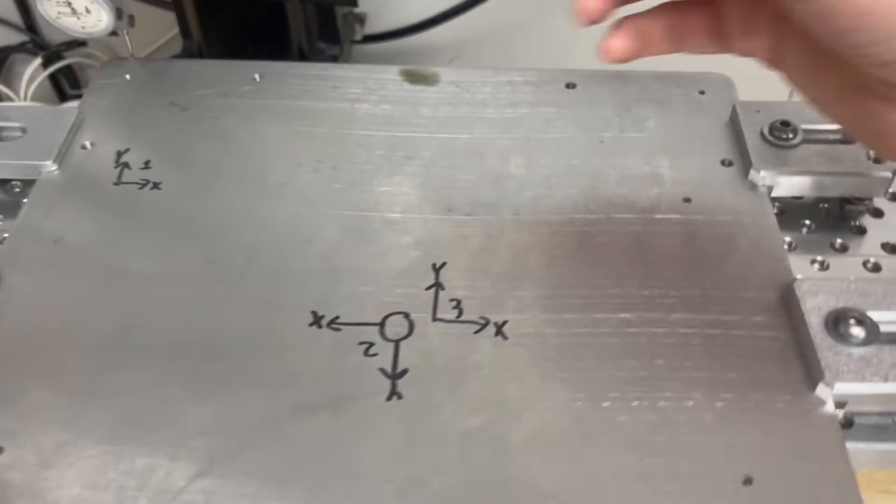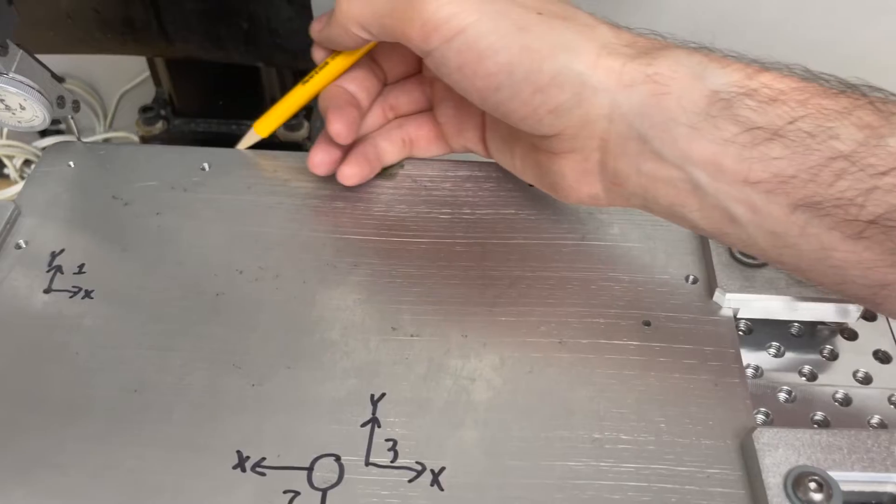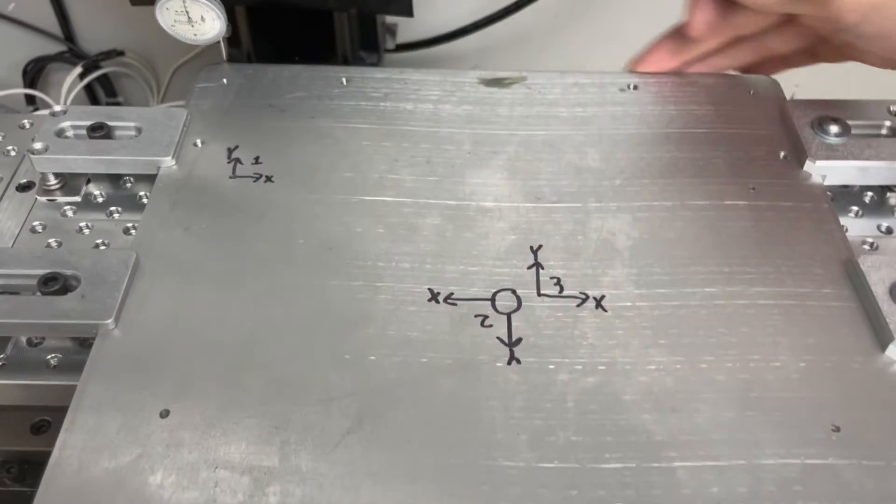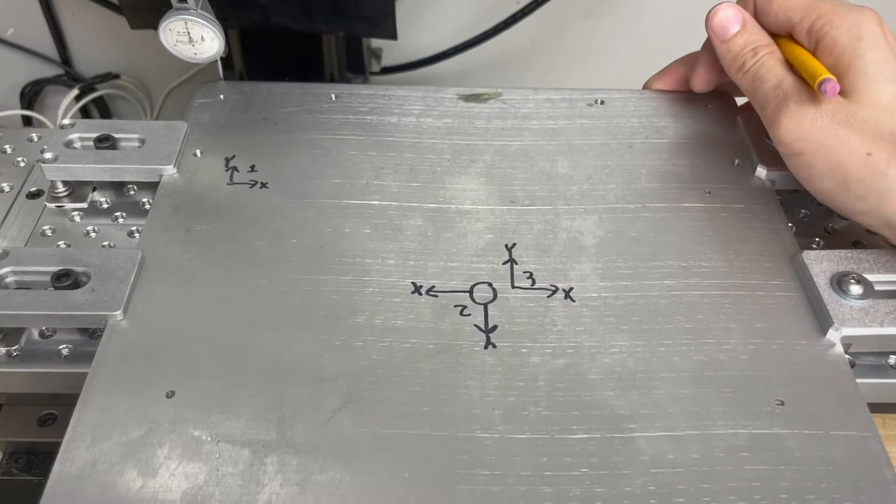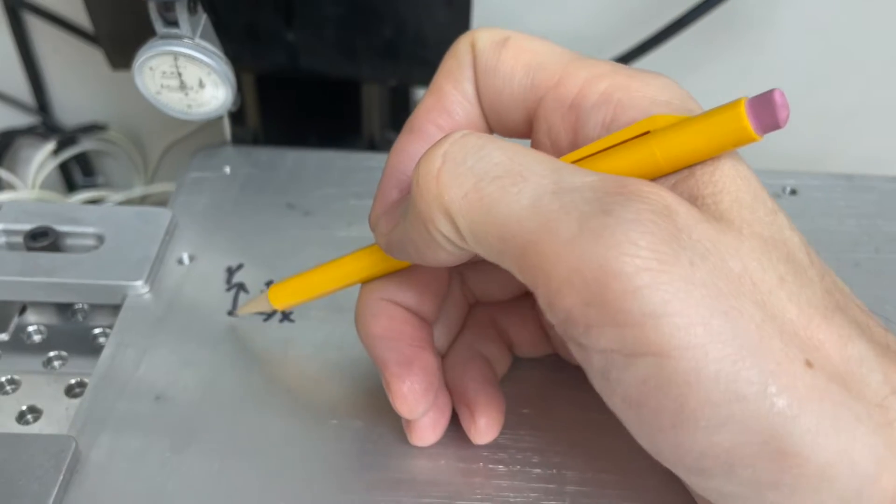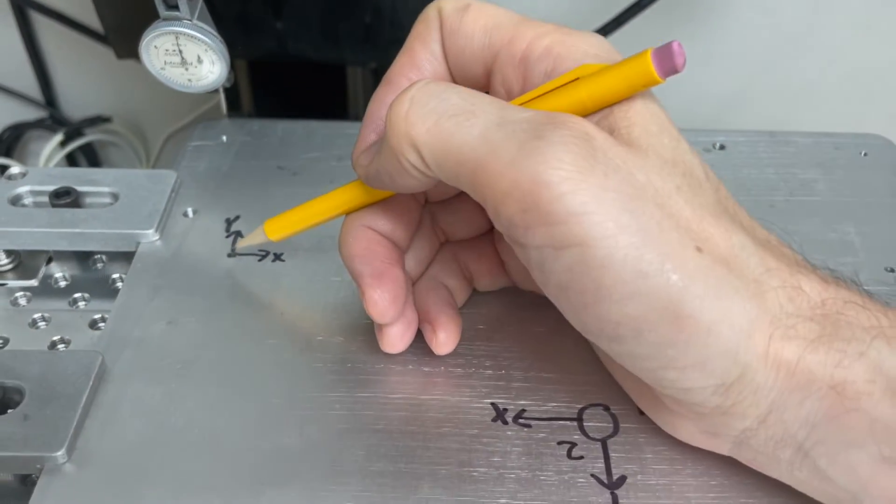And the first step in setting this up is I'm gonna sweep this back edge from the laser cut process to get this parallel to the x-travel and then I'm gonna pick up this using the indicator and that will be my origin and then I'll run my program.